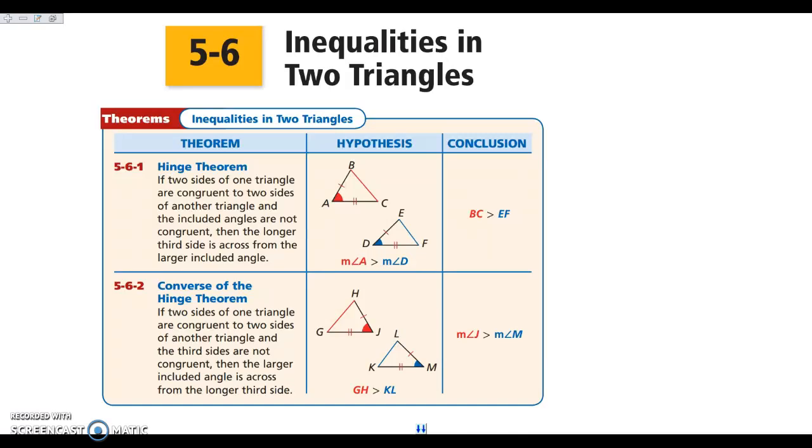Hey everybody, today we are looking at section 5-6, which is inequalities in two triangles. In the last section we talked about one triangle and how the largest side is across from the largest angle, the smallest side is across from the smallest angle. What we're looking at today is what happens when we compare two triangles.